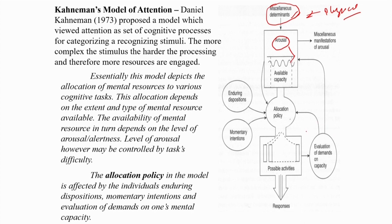Another interesting factor defining the attentional system is the evaluation of demands on capacity — how much demand is being made on the attentional capacity. If other jobs happening alongside the new incoming stimuli are automatic in nature, the filter will work effectively. But if a secondary job competes with the primary focus, both jobs compete for resources and the filter may block important content of the new message.